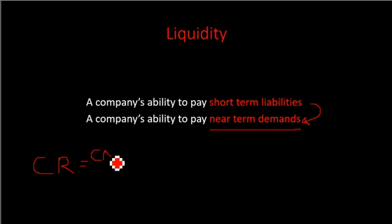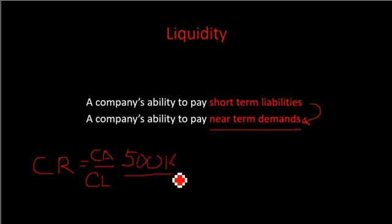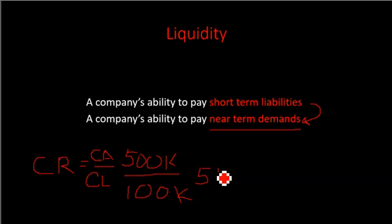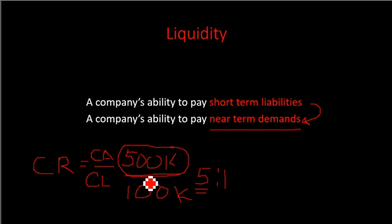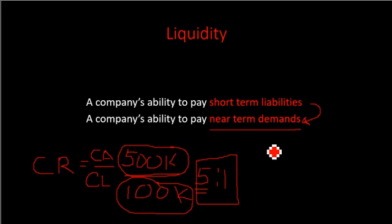Assuming your current assets are 500,000 and your current liabilities are 100,000, this gives us a ratio of 5:1 — meaning for every one peso of current liabilities, we have five pesos from current assets to pay it. But this is only based on your existing current assets found in your financial statements. This ratio appears favorable, but consider what happens three months from now.